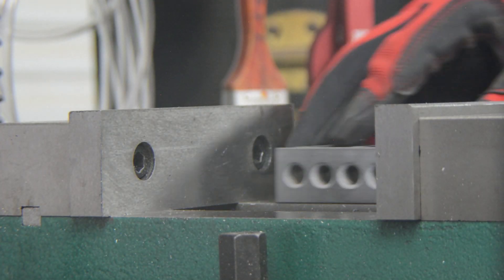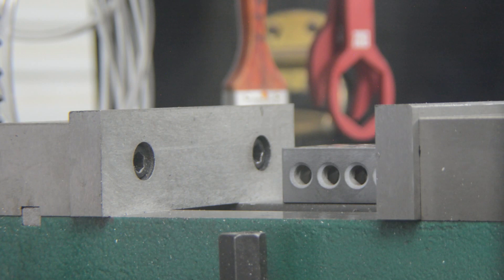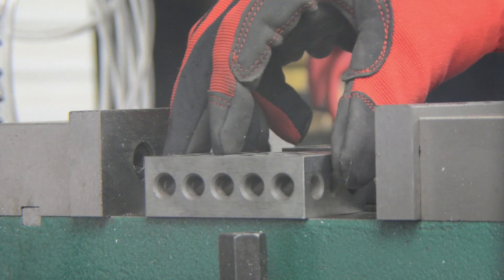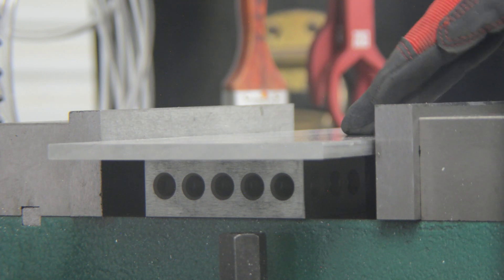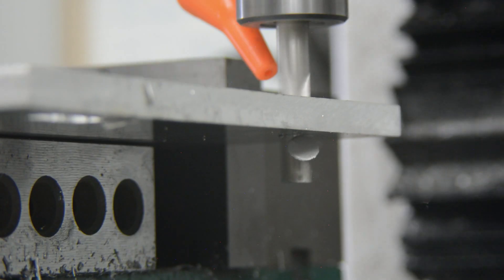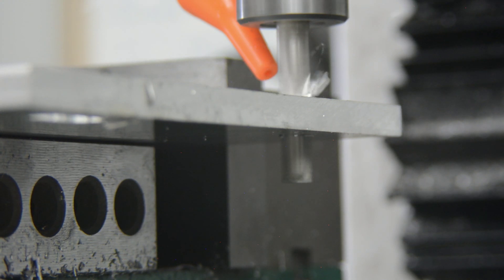One use of the blocks is to offset your part from the table of your mill or vice so that you can machine all the way through your part. Holes can be added to allow for joining blocks together.